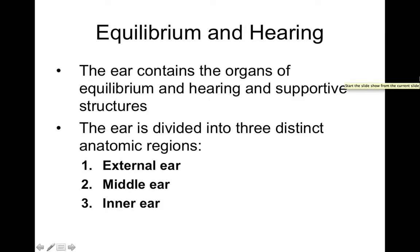In this video we're going to talk about equilibrium and hearing. Equilibrium is balance and hearing is hearing. You find the structures involved in both of these processes within the ear. We can divide the ear into three distinct anatomical regions: an external, a middle, and an inner ear.